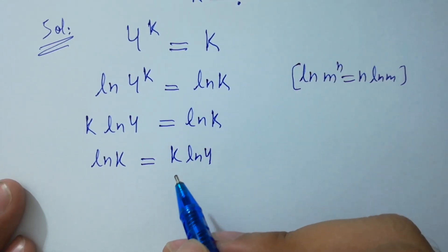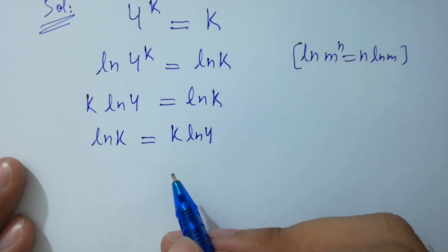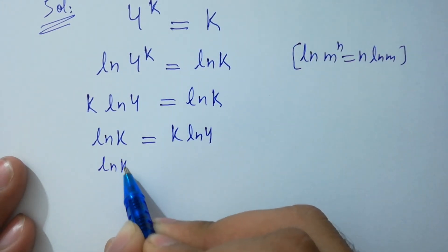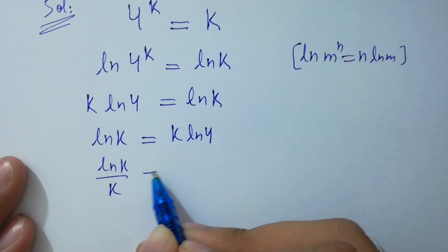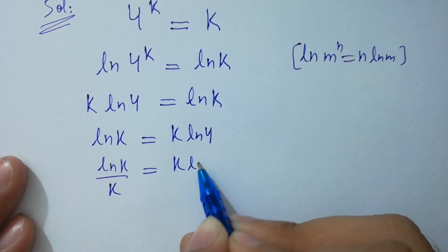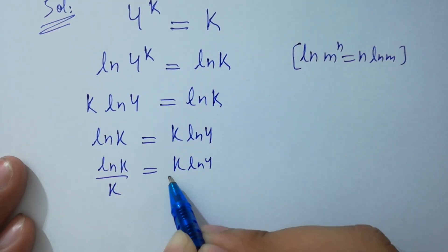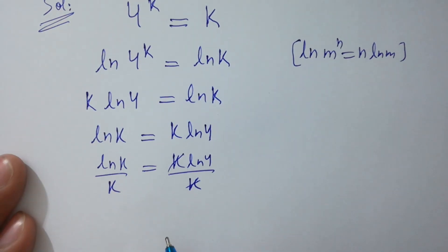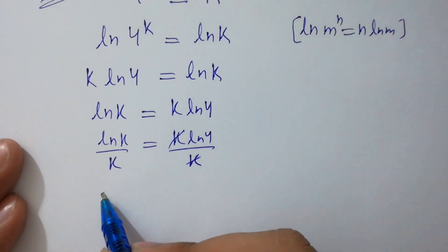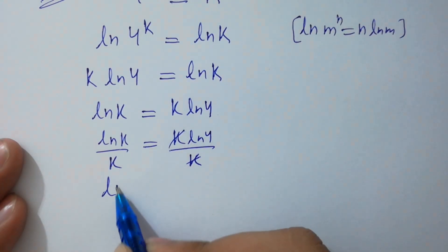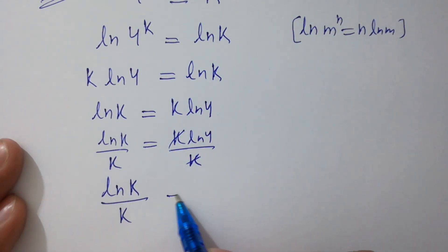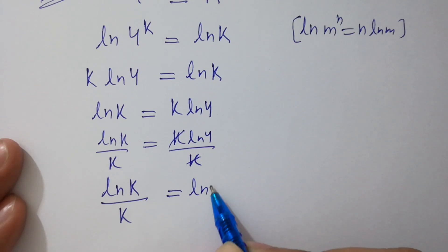Divide both sides by k: k ln 4 over k — k and k cancel. We have ln k over k equals ln 4.